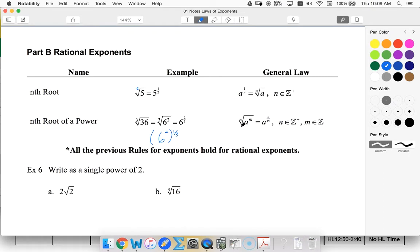More generally, we have the nth root of a to the m. m can be positive or negative. n has to be positive, but this could be negative. Of course, if it's negative, it would make a fraction.